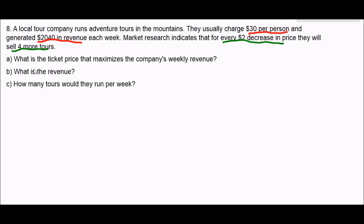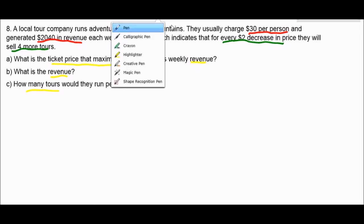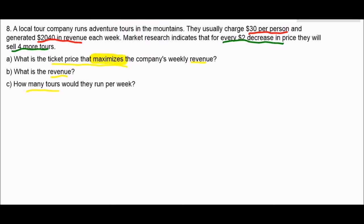Our goal is to find the following: What is the ticket price that maximizes revenue? What is the revenue? And how many tours would they run? When you read this question, the word that should really jump out is maximizes. When we're talking about maximizing or minimizing or optimizing, we're looking for the vertex of a quadratic relation. In this case, we're going to expect some sort of quadratic equation to exist, and to maximize it, we're going to find the maximum value, which would be the vertex.